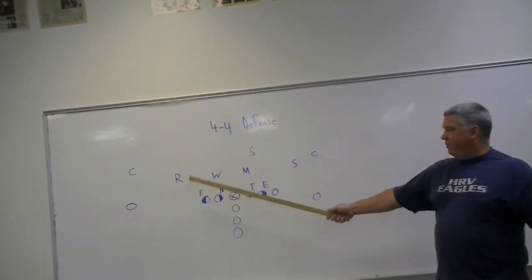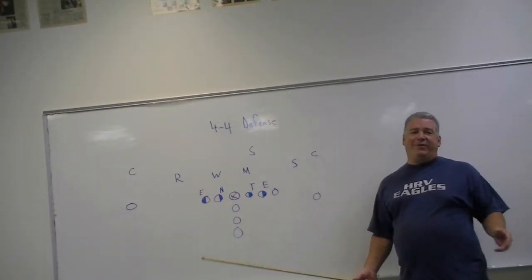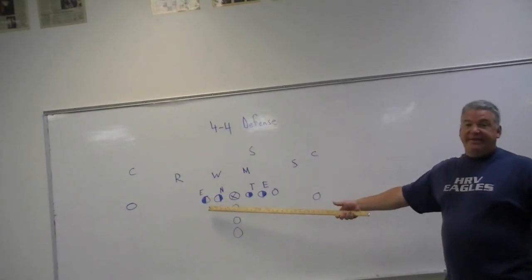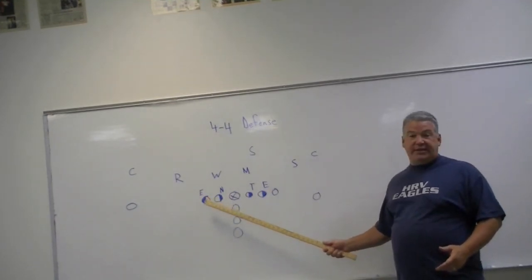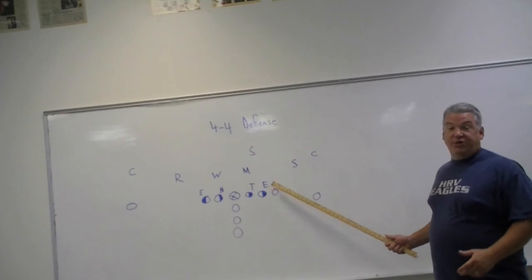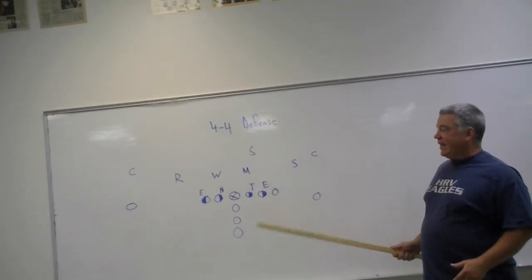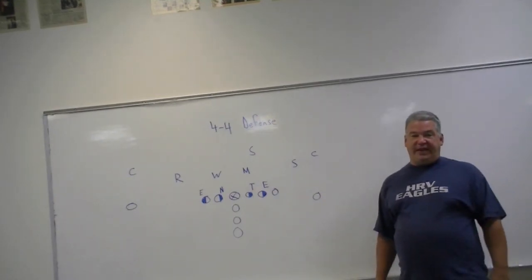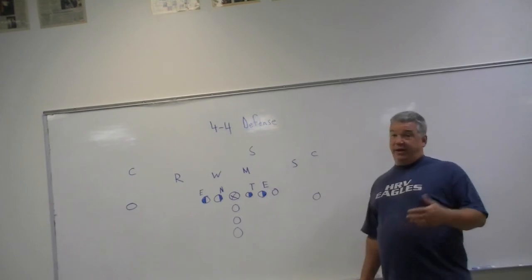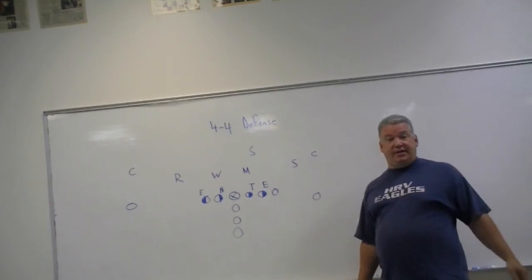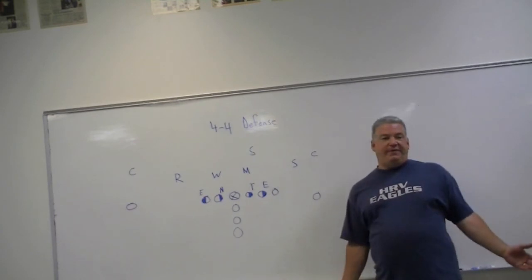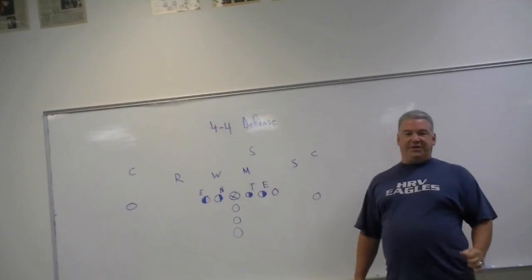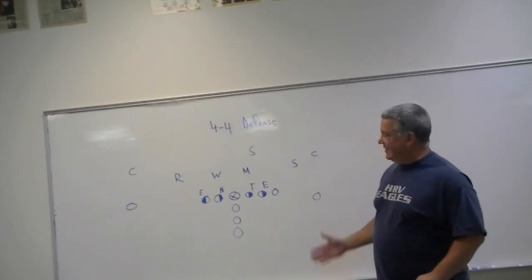Our defensive ends, this is kind of goes back and forth. There's one little bit of controversy here. Generally the backside guy, the guy away from the strength call, is always going to be a six technique. And some people play the strong side defensive end in a six, like I have them drawn here. And some people put them in a seven if there's a tight end. So move them out a little bit on that tight end. For the simplicity of teaching kids to play a certain way, if I were coaching middle school football, I would certainly play those defensive ends at six techniques. So they always know exactly where they're supposed to line up. That's one less variable on your defense. That's your call.